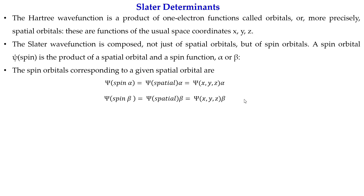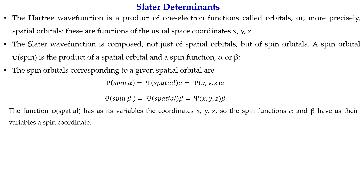We can express that psi_spin_alpha equals psi_spatial times alpha, i.e., psi(x,y,z) times alpha; and psi_spin_beta equals psi(x,y,z) times beta. The spatial function psi_spatial is a function of the spatial coordinates x, y, z, and the spin functions alpha and beta have their own variable — a spin coordinate.